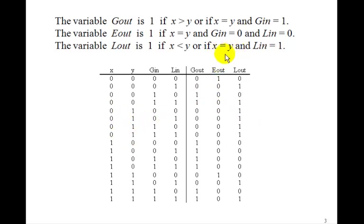Or if they're equal and l in is 1. So here's l in is 1 and they're equal. Here l in is 1 and they're equal. Here l in is 1 and they're both 1. So that's how we get the truth table.